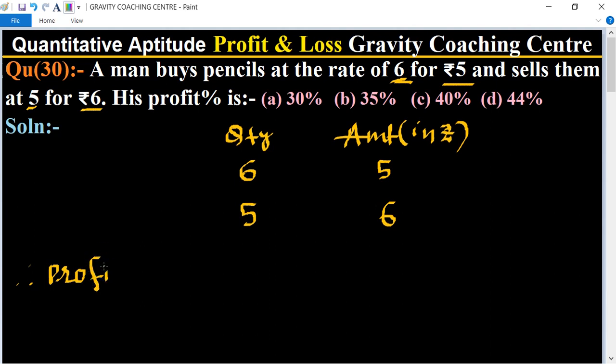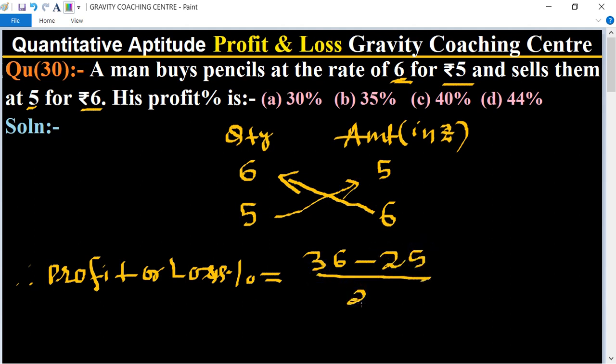Profit or loss percent equals: first multiply 6 into 6 equals 36, minus 5 into 5 equals 25, upon 25, multiply by 100. So 25 times 4 is 100, and...